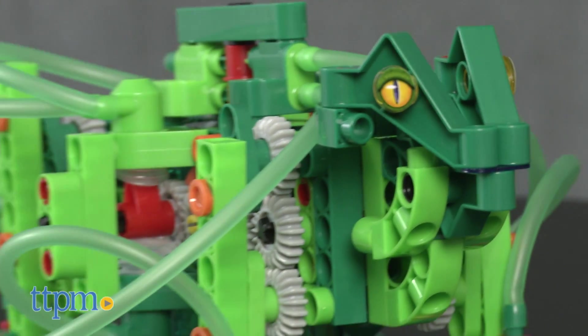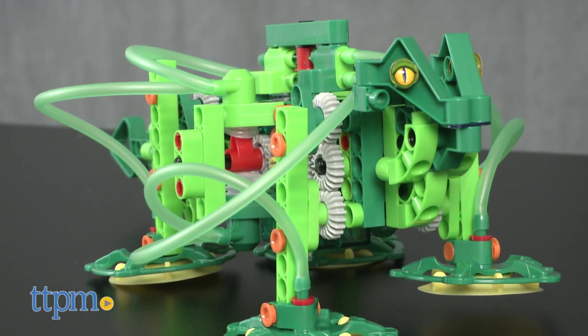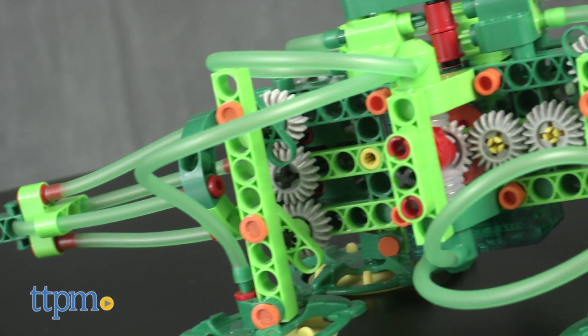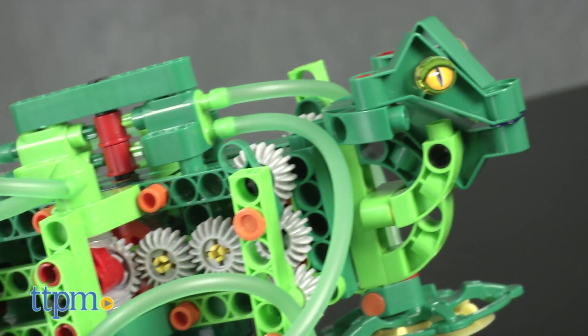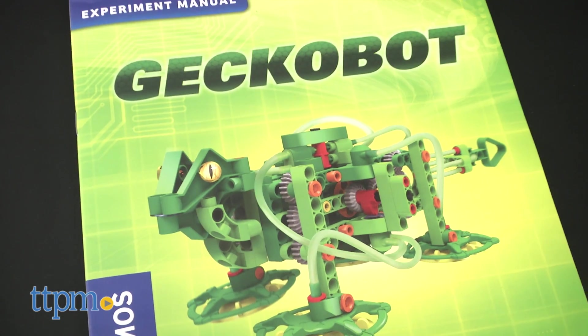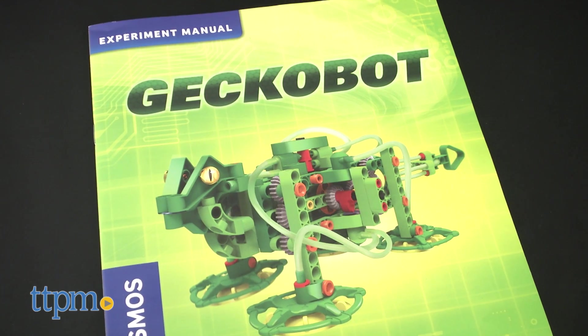Experiment with the physics of air pressure and suction with this mechanical experiment kit that comes with 176 pieces to build a geckobot along with six other models like an inchworm, smartphone holder, tow truck and more. A 24-page instruction manual is also included.